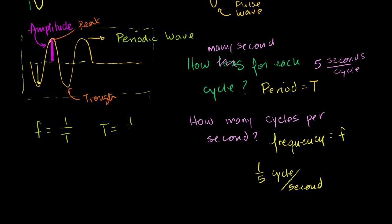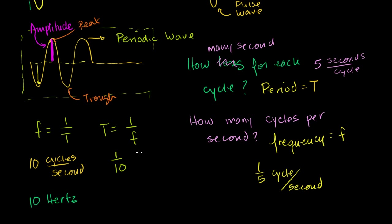So if I told you that I'm vibrating the left end of this rope at 10 cycles per second — and by the way, the unit of cycles per second is a hertz, so I could have written this as 10 hertz — if my frequency is 10 cycles per second, my period is going to be 1 over that: 1 over 10 seconds per cycle. If I can do that 10 times in a second, it's going to take me one tenth of a second to do it each time.